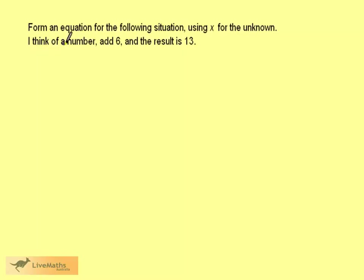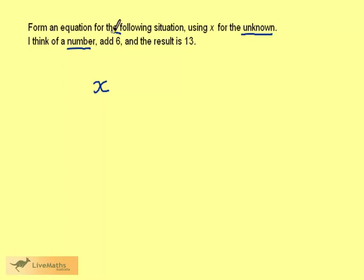We're told to form an equation for the following situation using x for the unknown. I think of a number, add 6, and the result is 13. The number I think of is the unknown, so I'm going to use x to represent this number. The first thing we do to it is add 6, and we're told the result is 13. Therefore, x plus 6 must be equal to 13, and this is an equation.